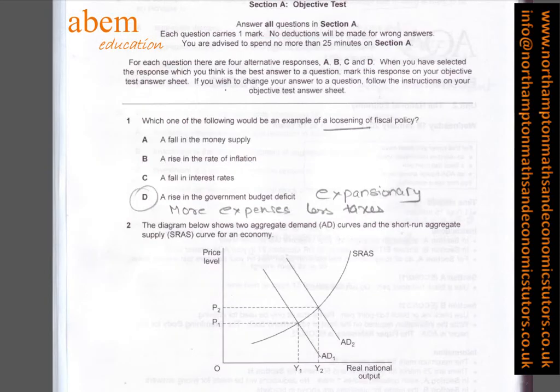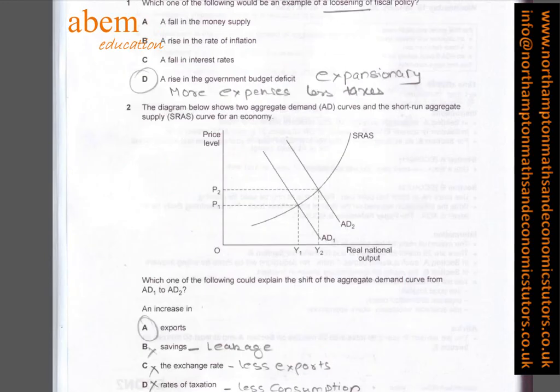In question one, which one of the following would be an example of a loosening of fiscal policy? The answer is D: a rise in the government budget deficit. This is an expansionary fiscal policy because the government is having more expenses and less taxes, so it's increasing the deficit.